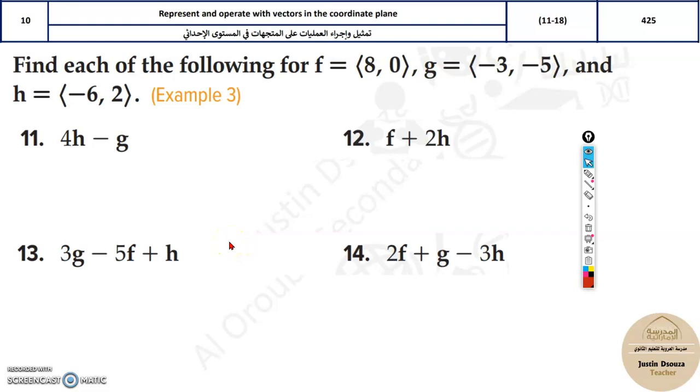The tenth topic is one of the easiest. Over here they have given you vectors f, g, and h, and you need to solve them according to what they have asked you. So they have asked you for 4h minus g.